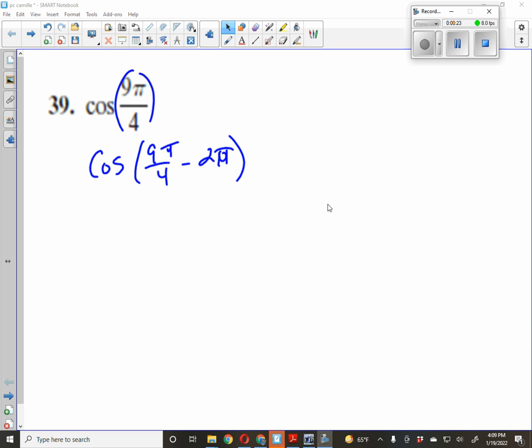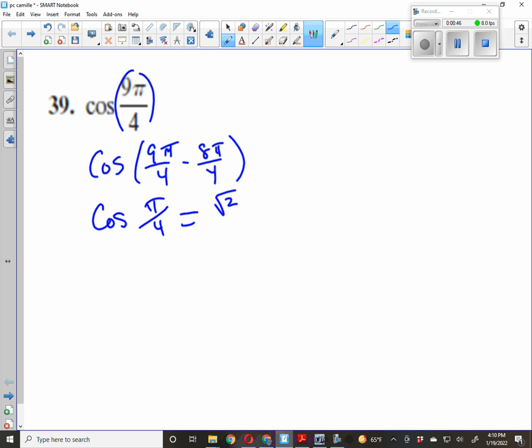That 2π, I probably should write it as minus 8π over 4 instead of 2π, which gives me the cosine of π over 4, which we know right off the unit circle is root 2 over 2.